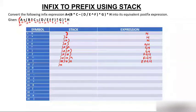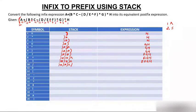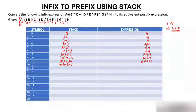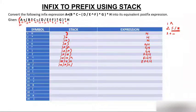Then divide (/) comes. Power has the highest priority, then multiply/divide at the same level, and plus/minus at the lowest. Since divide has lower priority than the power already on the stack, power jumps from the stack to the expression. Divide then goes onto the stack, and we have e, f, g, h in the expression.